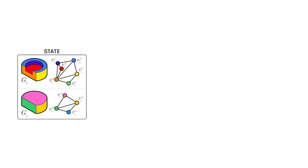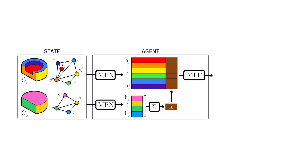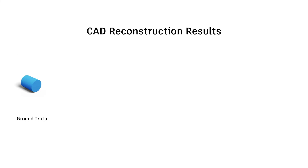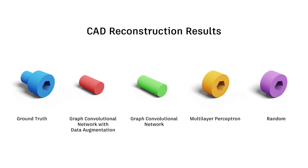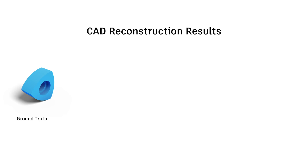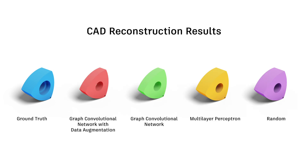An agent takes the state containing the current and target geometry and outputs the next action in the sequence. In the paper, we report results on a number of agent configurations using different networks, data augmentation techniques, and normally-guided search strategies.